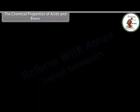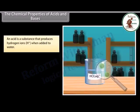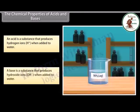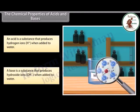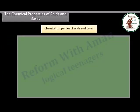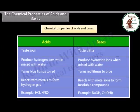An acid is a substance that produces hydrogen ions when added to water, whereas a base is a substance that produces hydroxide ions when added to water. Both acids and bases have different chemical properties. Let us look at their properties.